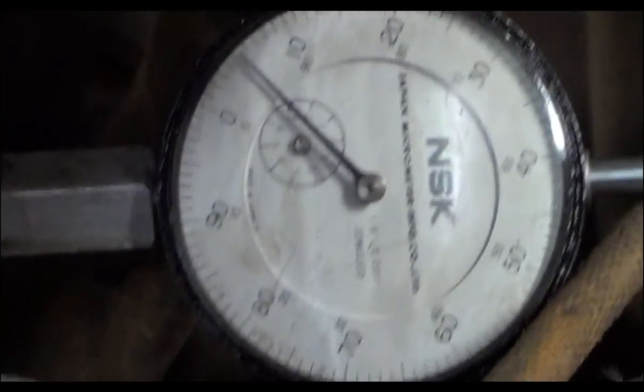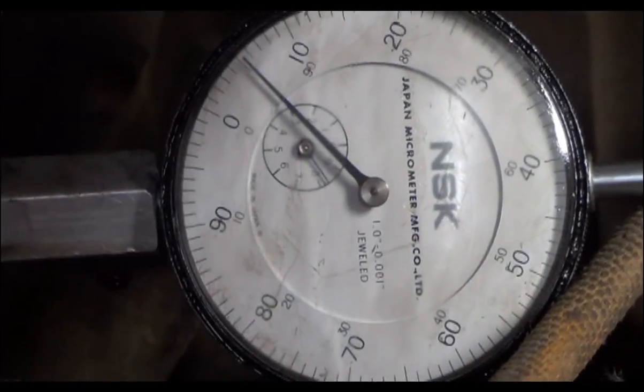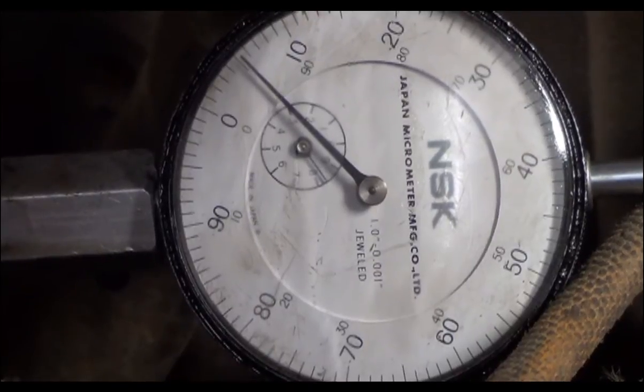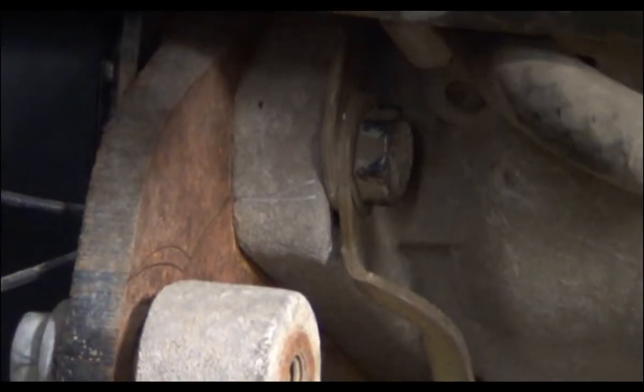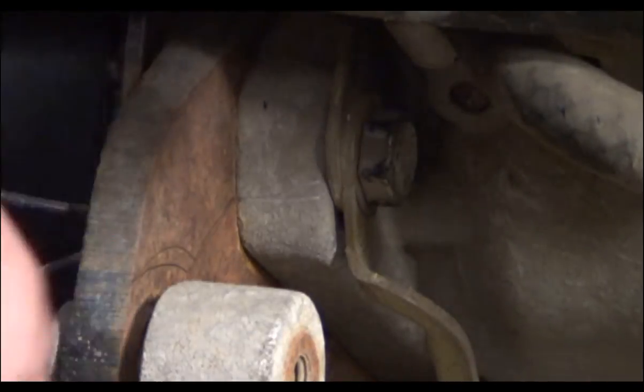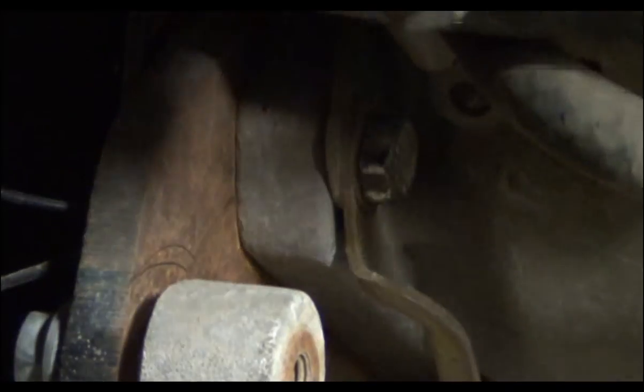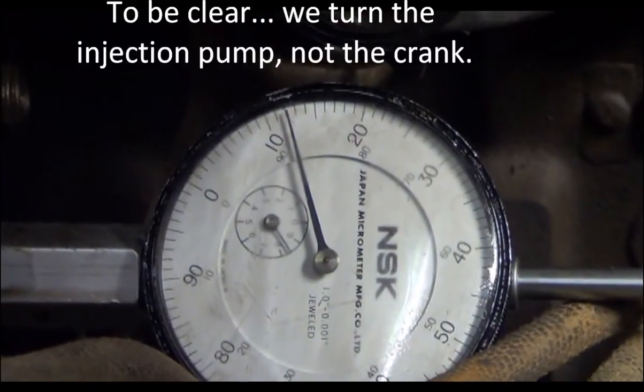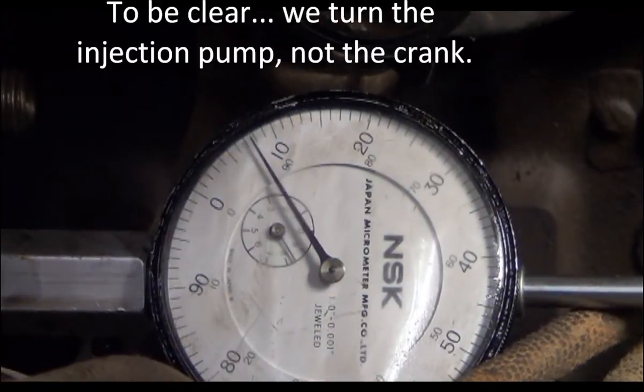What we want is the gauge to be at about thirty-three thousandths on a non-turbo car or thirty-nine thousandths on a turbo car. This is a non-turbo. So to get the adjustment quickly, we loosen this bolt. The rest of the bolts are already loose. And at that point, we can turn the injection pump. See that? We can turn the injection pump. And then we turn it until it's at thirty-three. Now we're at where we have the crankshaft at top dead center.